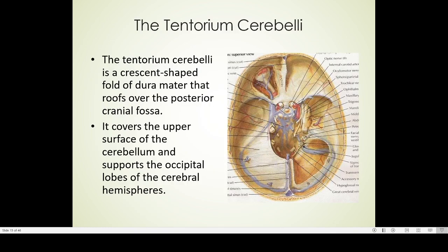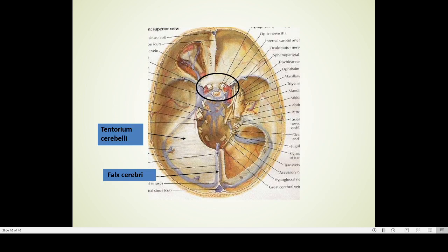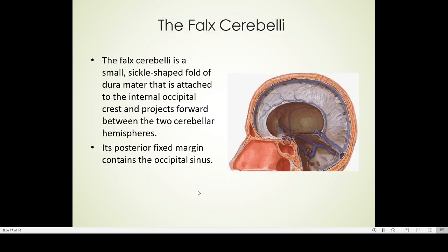The tentorium cerebelli is a crescent-shaped fold of dura mater that roofs over the posterior cranial fossa. It covers the upper surface of the cerebellum and supports the occipital lobes of the cerebral hemispheres. The falx cerebelli is a small sickle-shaped fold of dura mater attached to the internal occipital crest, and projects forwards between the two hemispheres of the cerebellum.